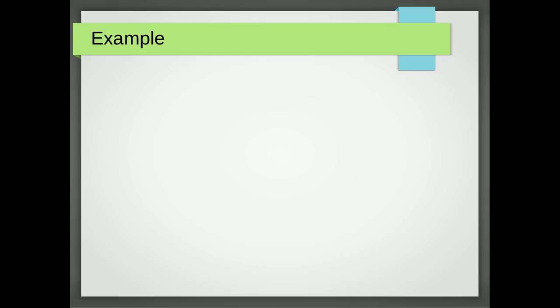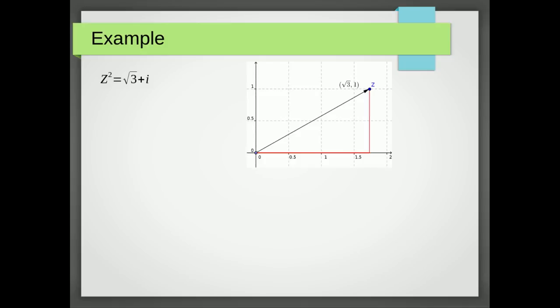OK, so let's have a look at an example and remember all the steps that we go through. Here's our question: Z squared equals √3 + i. So the real part is √3 and the imaginary part is i.